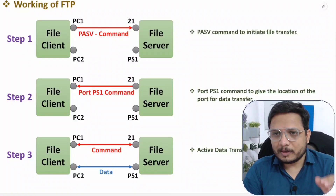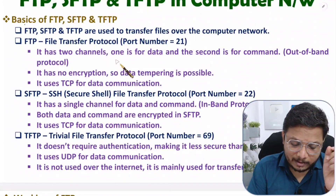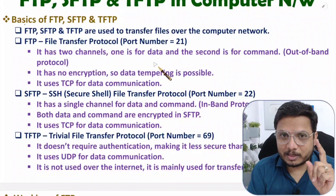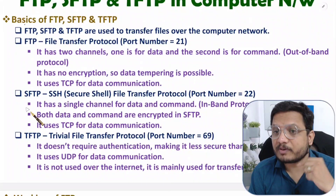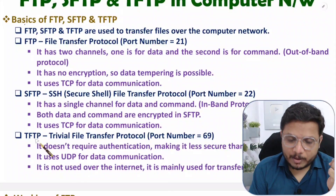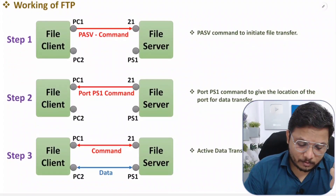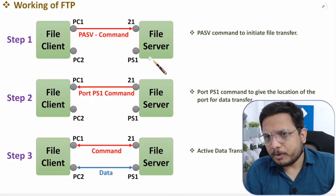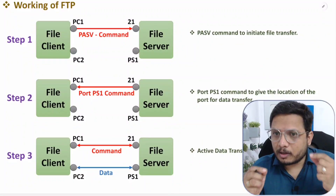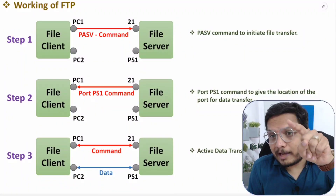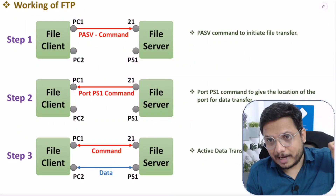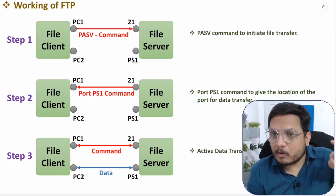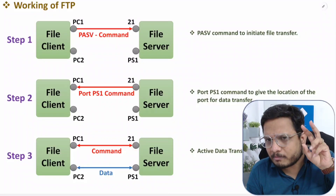Now let me explain the working of FTP. FTP uses two channels — one for data and one for commands. First we perform authentication. Here we have a file client, which could be your computer, and a file server where we can store files. On the server you can upload files, and from the server you can download or access files. This upload and download/access functionality is the basic purpose of FTP.